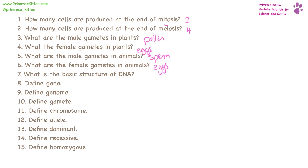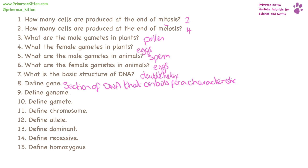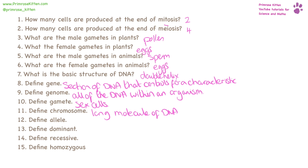The basic structure of DNA is a double helix. A gene is a section of DNA that codes for a characteristic. The genome is all of the DNA within an organism. Gametes are sex cells — so sperm, egg, or pollen. A chromosome is a long molecule of DNA. Alleles are different versions of genes.